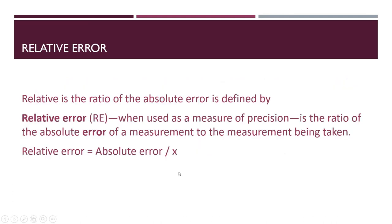Relative error is the ratio of the absolute error to the measurement being taken. In short, we say RE. When used as a measure of precision, relative error is the ratio of the absolute error of a measurement to the measurement itself. Relative error equals absolute error divided by x.